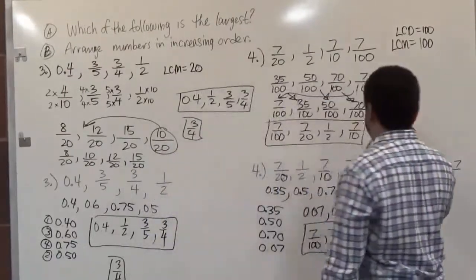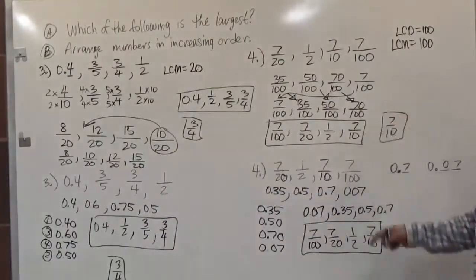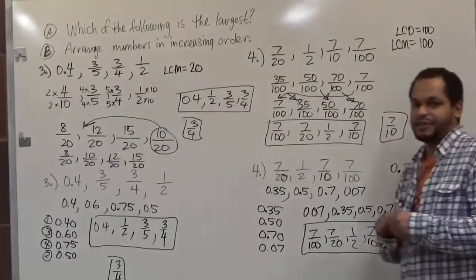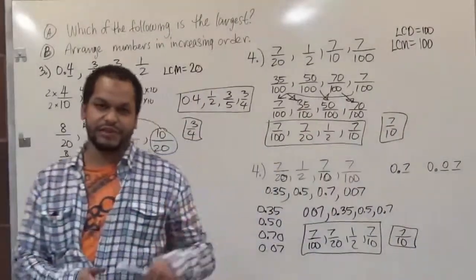And again, the largest one is still 7 over 10. Same as before. And these work just a little bit easier for those who like fractions more than decimals.